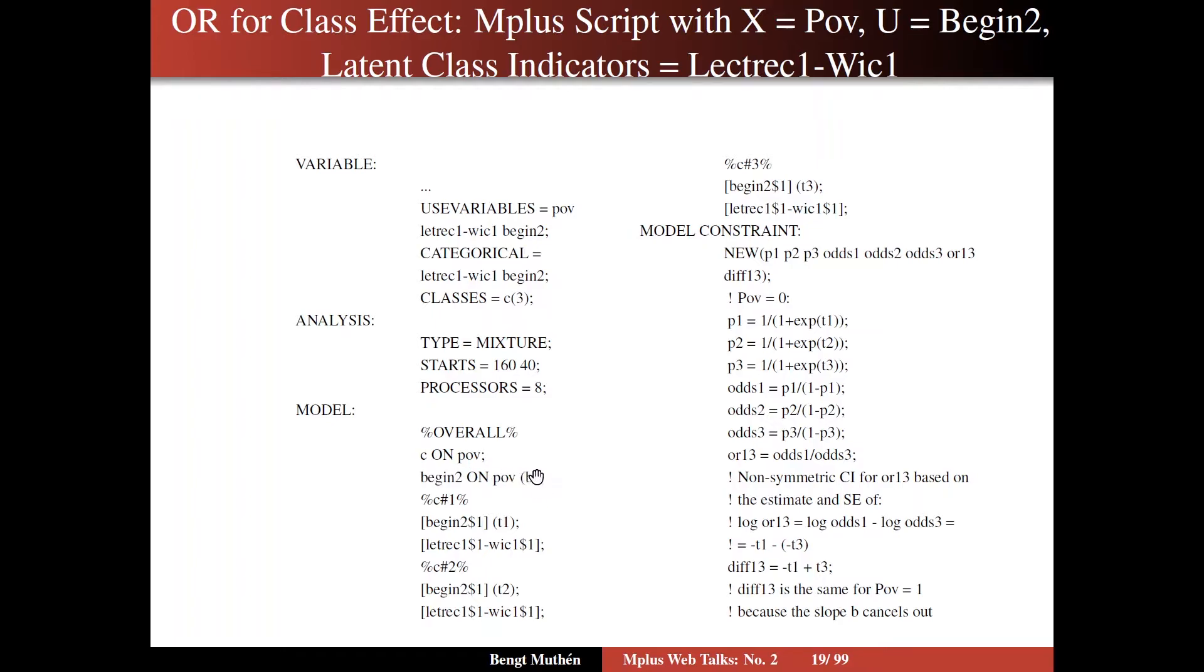Putting this regression up here in the overall means that it is held equal across the different classes of C. So there's no interaction between C and poverty. Then in class 1, you put in the distal outcome threshold, begin 2, threshold 1. It's a binary variable and label it T1. Then you have the latent class indicators, the thresholds of which you want to vary across class 2 and across class 3. In all three classes, you label the threshold for the distal outcome T1, T2, T3.